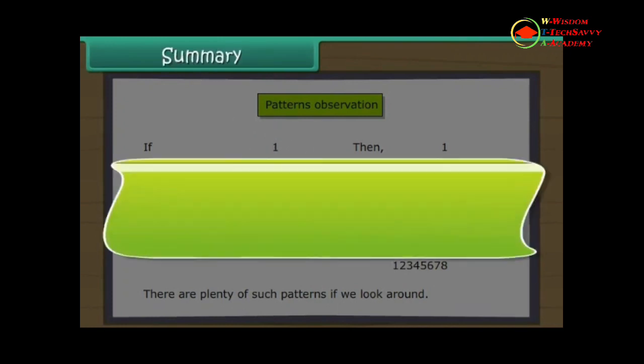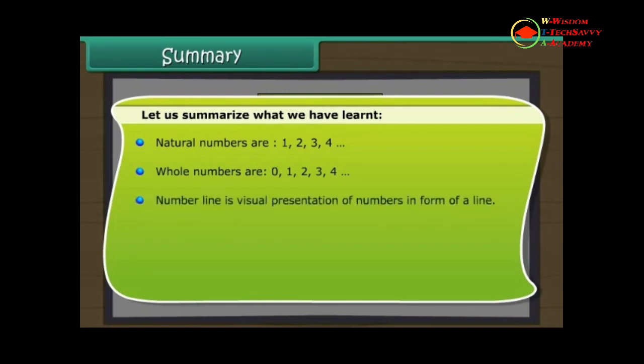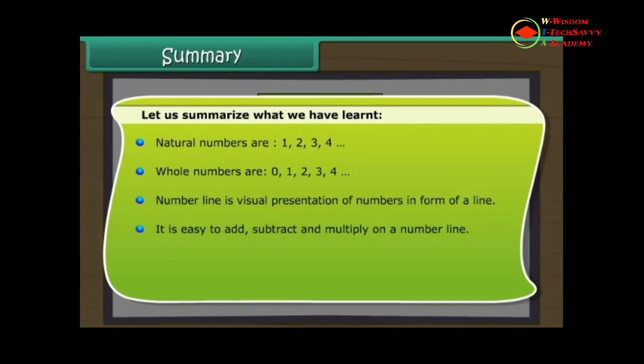Summary. Let us summarize what we have learnt. Natural numbers are 1, 2, 3, 4. Whole numbers are 0, 1, 2, 3, 4. Number line is visual presentation of numbers in form of a line. It is easy to add, subtract and multiply on a number line. Properties of whole numbers include closure, associative, commutative and distributive properties. Whole numbers follow a pattern.